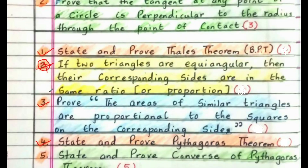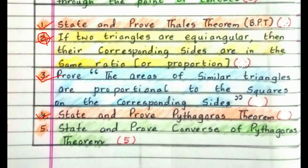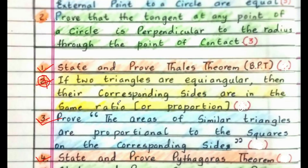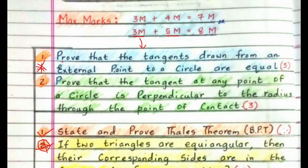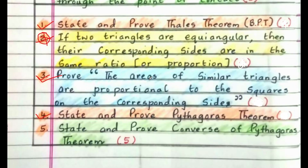The important theorem for 5 marks will be state and prove Pythagoras theorem, then the areas of similar triangles, then state and prove Thales theorem. The definite 3-mark theorem is: the tangent drawn from the external point to a circle are equal. Now we will be seeing in detail all these 4 theorems.